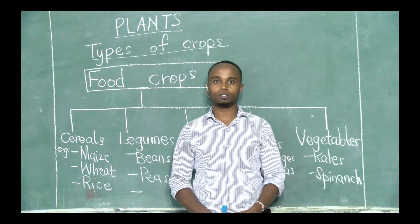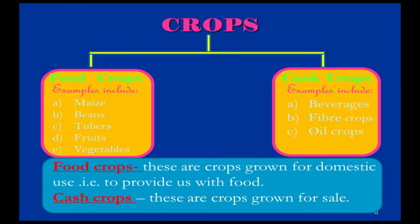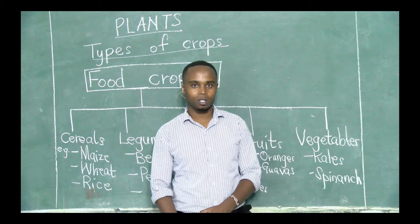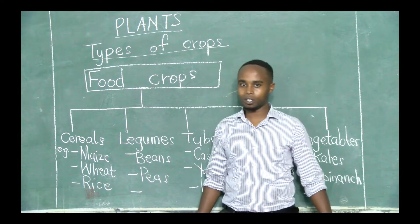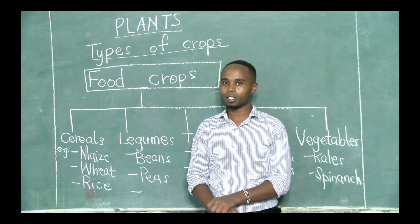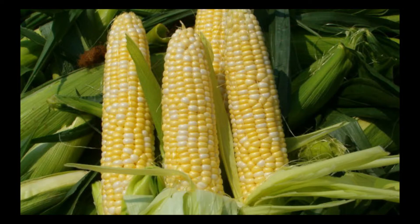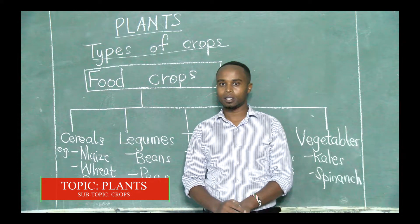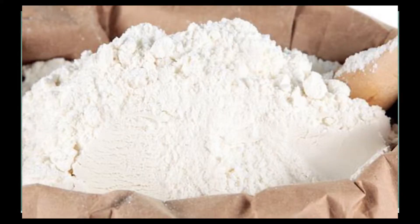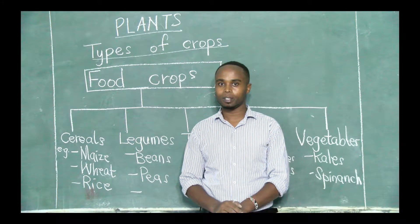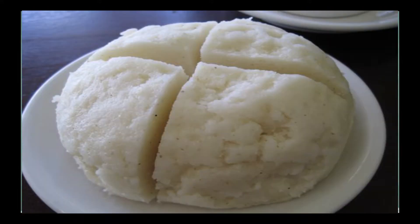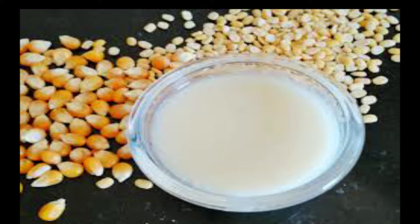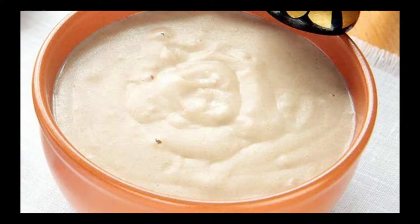So let us start with cereals. The first example is maize — you all know maize. The products that we get from maize include maize flour, popcorns, ugali, and porridge. We get ugali from maize flour which comes from maize. Those are products of maize, which is a cereal.